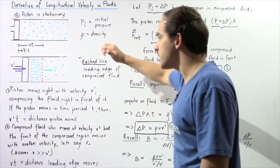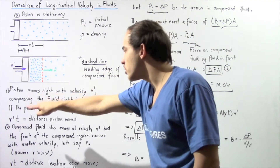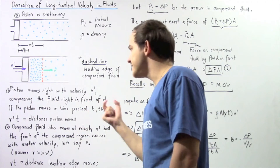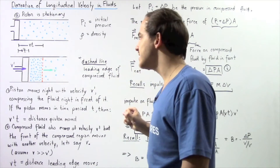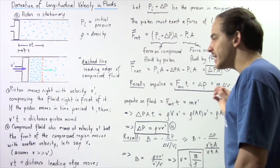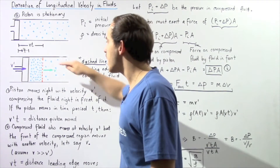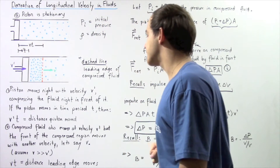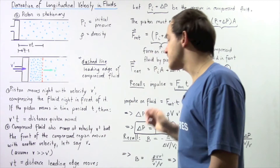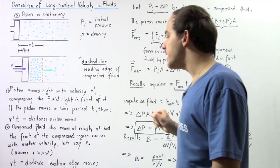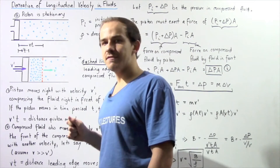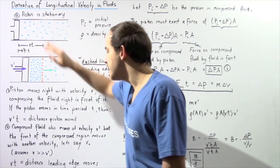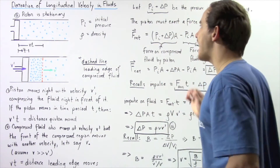To recap: the piston moves right with velocity V', compressing the fluid in front of it. The distance the piston moves in time T is V' times T. The compressed fluid molecules are pushed by the piston with that same velocity V', but the front of the compressed region moves with velocity V, where V is much greater than V'. The distance the leading edge moves from its initial position is V times T.